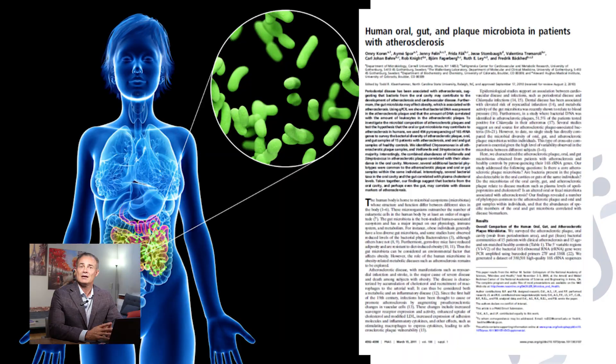The abundance and type of bacteria in the arterial plaque correlated with the type and abundance in the mouth. Simple daily tasks have been shown to cause transient bacteremia — a bacterial infection in the blood. In the healthy, the immune system clears these bacteria, but in the unhealthy, this extraoral bacterial burden can contribute to morbidity and mortality.